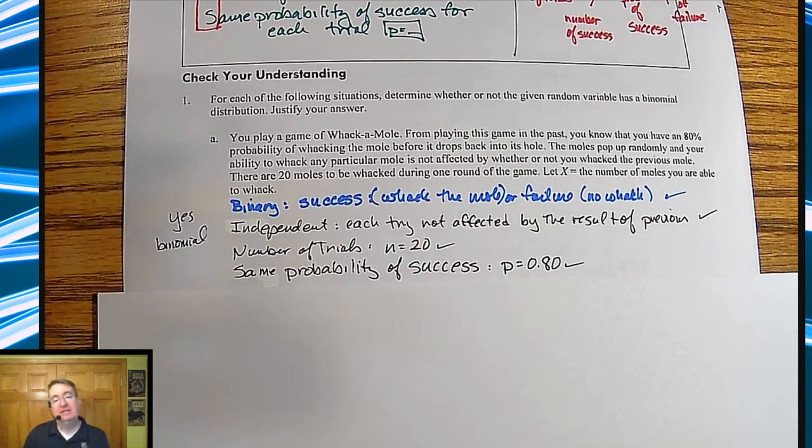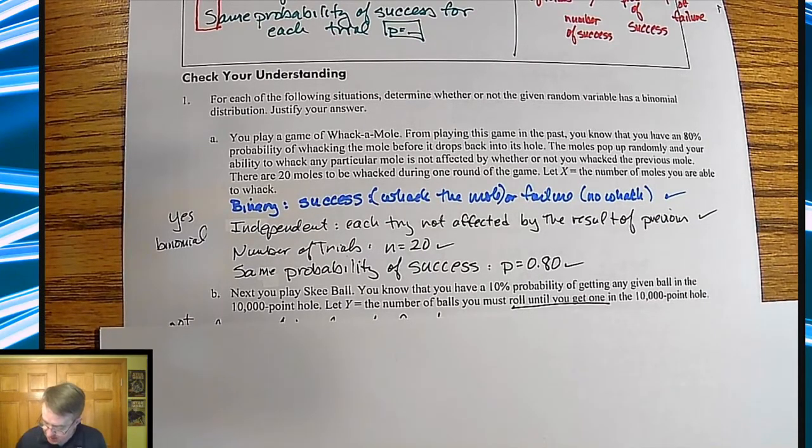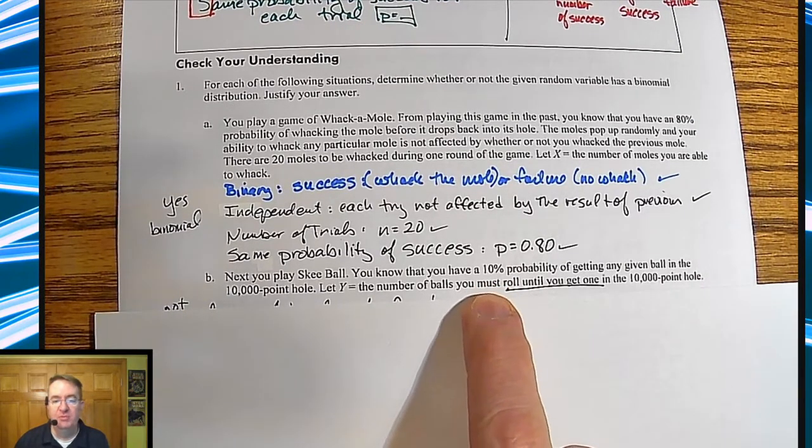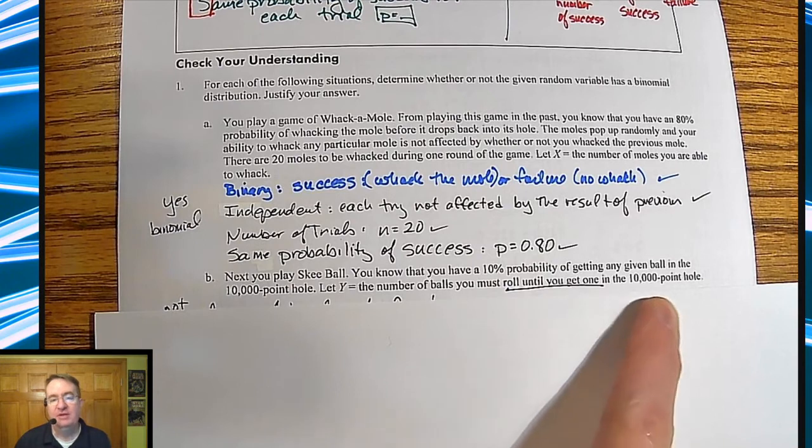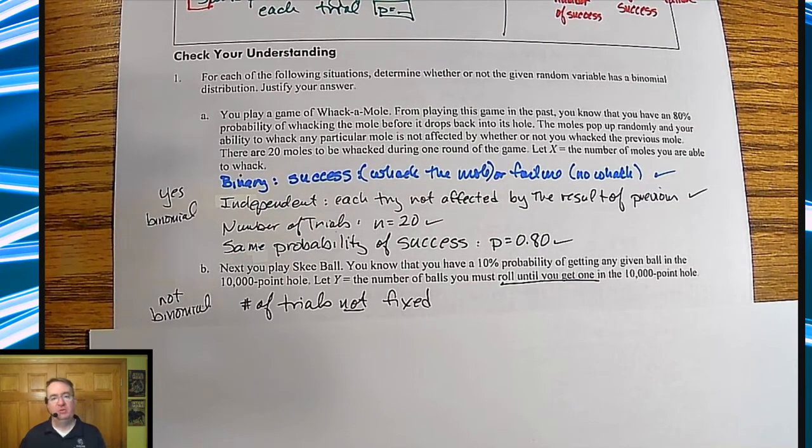Now, an example of something that's not binomial would be this, the second one. You're going to play skee-ball. You have a 10% probability getting any ball in any 10,000-point hole. Y be the number of balls you must roll until you get one in the 10,000-point hole. So your number of trials isn't fixed. You're just going to roll until you make it. That's the reason why this one falls apart.